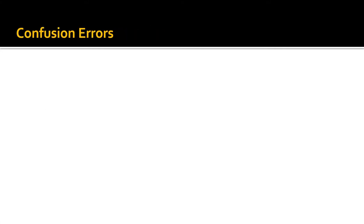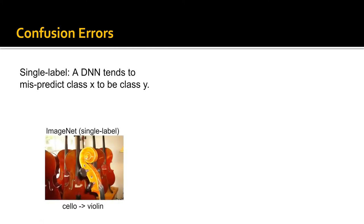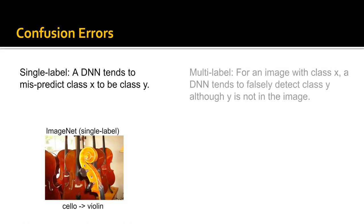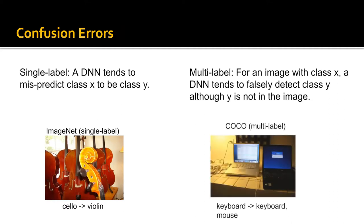We study two types of errors. The first one is called confusion errors. For single-label classification problem, confusion error is that a DNN tends to mispredict class X to be class Y. As an example, in this image, these channels are mispredicted as valves. For multi-label classification, confusion error means for an image with class X, a DNN tends to falsely detect class Y, although Y is not in the image. As shown in this example, although mouse is not in the image, the DNN detects mouse in the image.